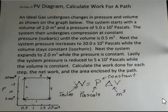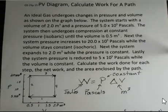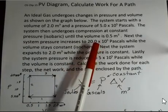This is called an isobaric change. Then the system on path number 2 has an isochoric change. We're keeping the volume constant and bring the pressure up to 20 times 10 to the 5th pascals.